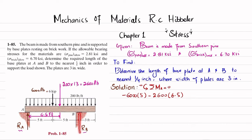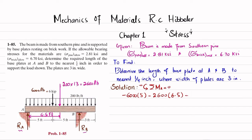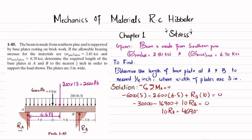Rb at a perpendicular distance of 10 feet produces a counterclockwise moment: +Rb × 10. Setting the sum equal to zero: −30,000 − 16,900 + 10Rb = 0, so 10Rb = 46,900, giving Rb = 4,690 pounds. This is the reaction force from the brickwork at point B on the beam or base plate.